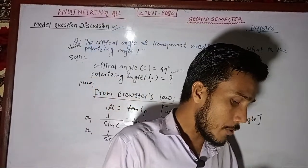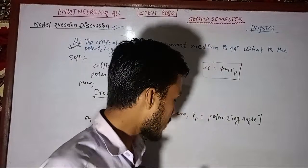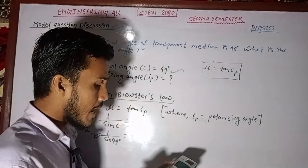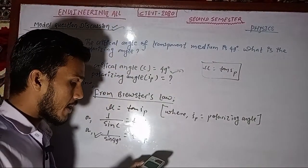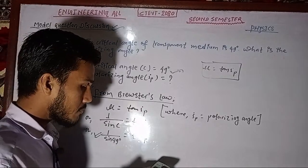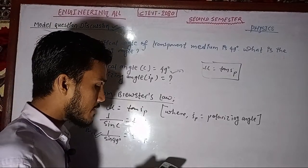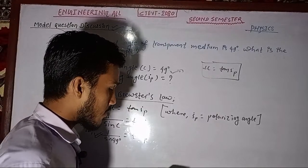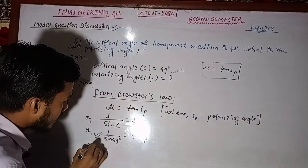1 upon sin(49°) — calculating sin(49°) to find mu.